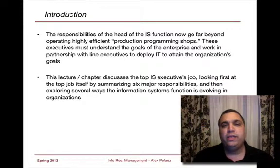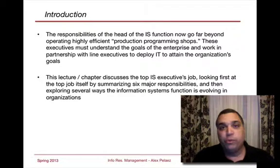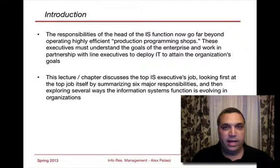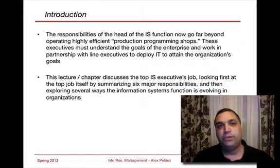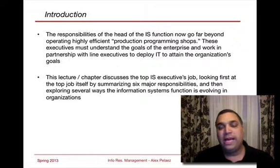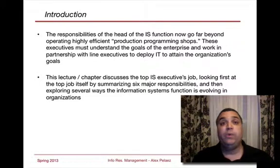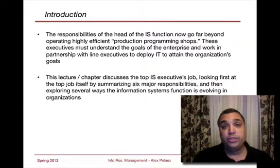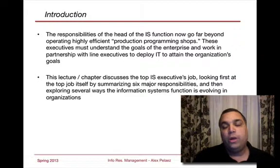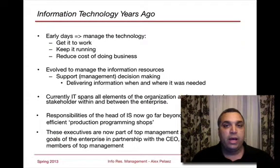The responsibilities of the head of the IS function go far beyond operating an efficient programming shop, as it used to be in the 80s. It used to be that you had a person who ran IT, came up from the computer science ranks, and basically dictated how development was going to occur. That's no longer the case. Now over 50% of CIOs actually come from a business function — they may be marketing people who understand technology, as opposed to technologists who came up the ranks. So the key question is: what are the skill sets that a Chief Information Officer needs and what are they focused on?